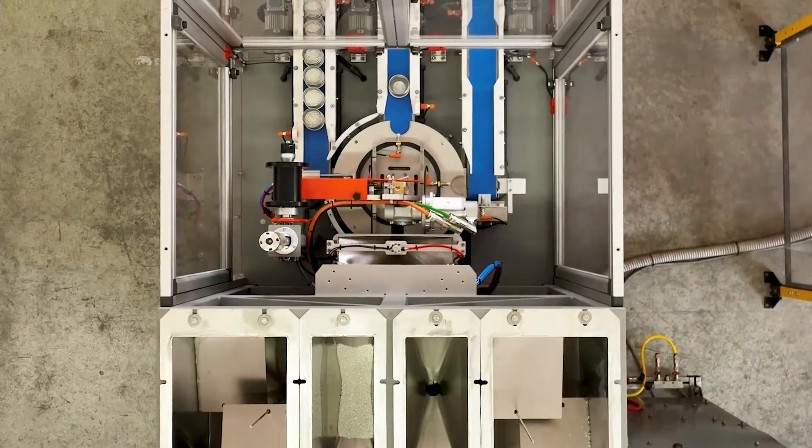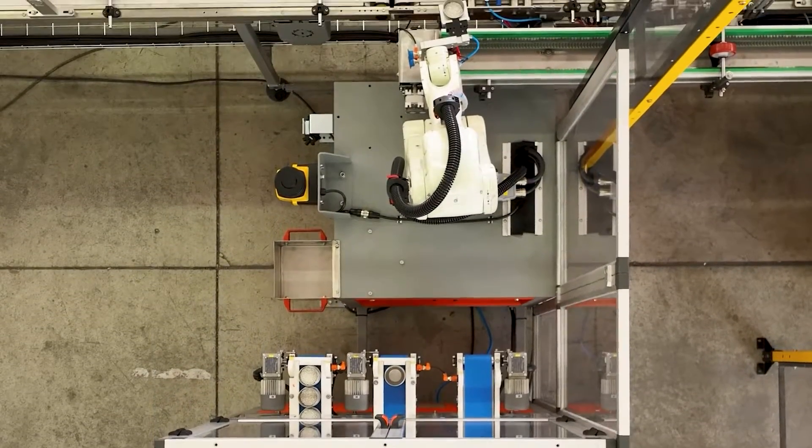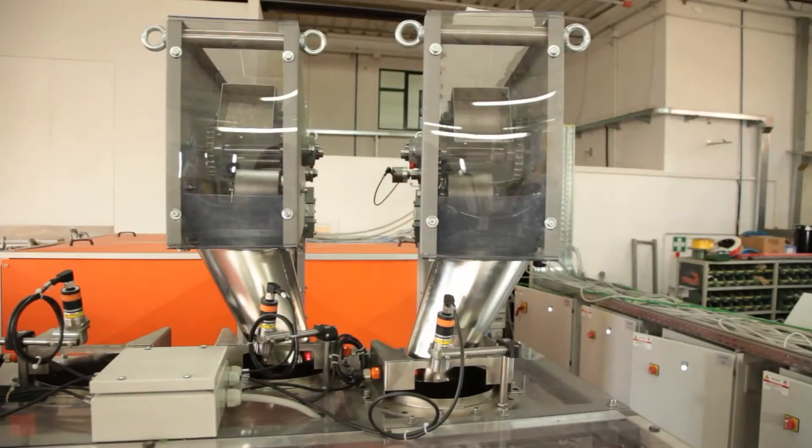T-Line is an automated module line in which each module can also work as a standalone machine and can be integrated over time, depending on customers' requirements.